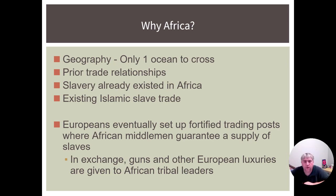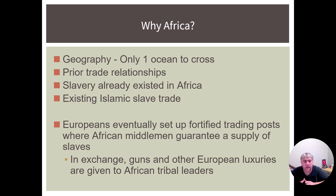Eventually, European powers set up trading posts that look like castles on the coast. They did business with African middlemen who would bring slaves from the interior to the Europeans in exchange for guns, weapons, alcohol, and other things that African tribal leaders considered to be luxuries.